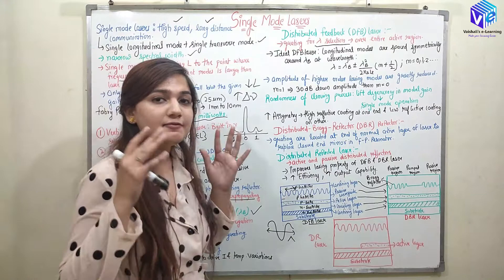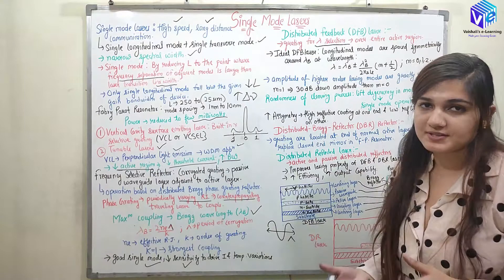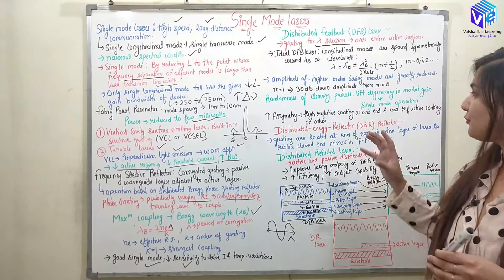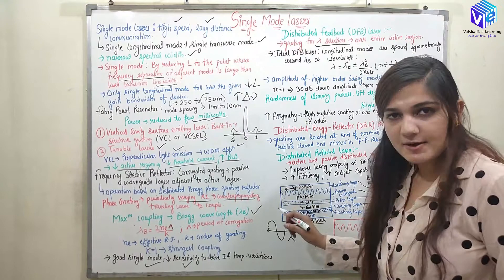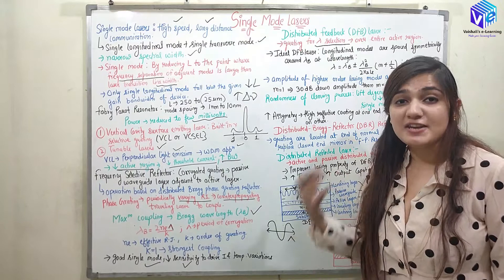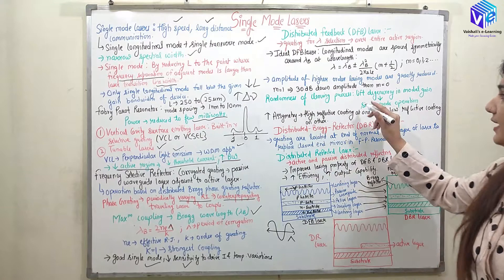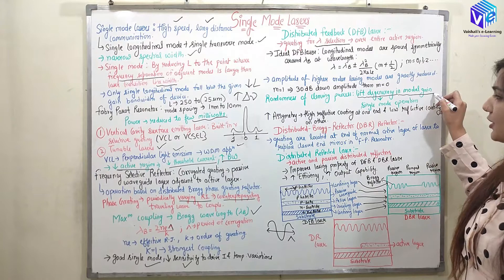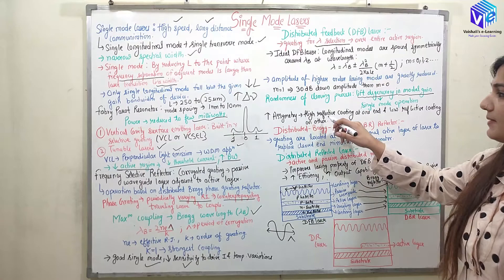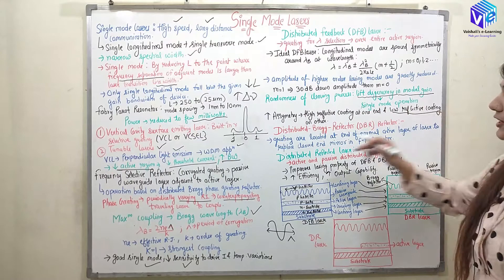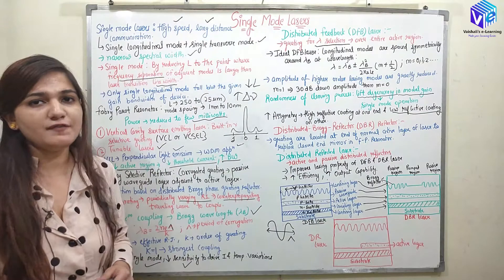If both reflecting mirrors are very precisely symmetric, single mode operation is not achievable. However, asymmetric reflections — higher randomness in the cleaving process — lift the degeneracy in modal gain, enabling single mode operation. This is achieved by applying a high-reflective coating on one end and a low-reflective coating on the other, improving single mode operation of the DFB laser.